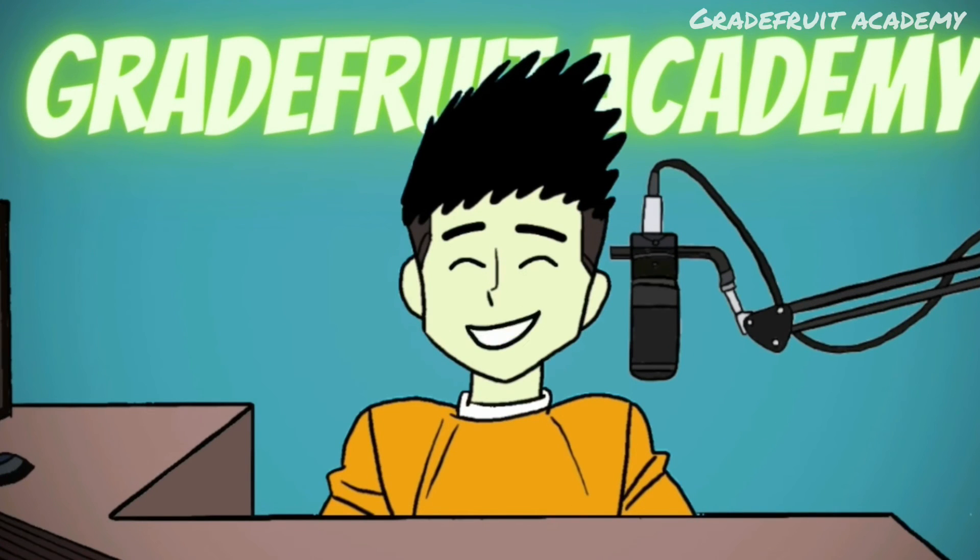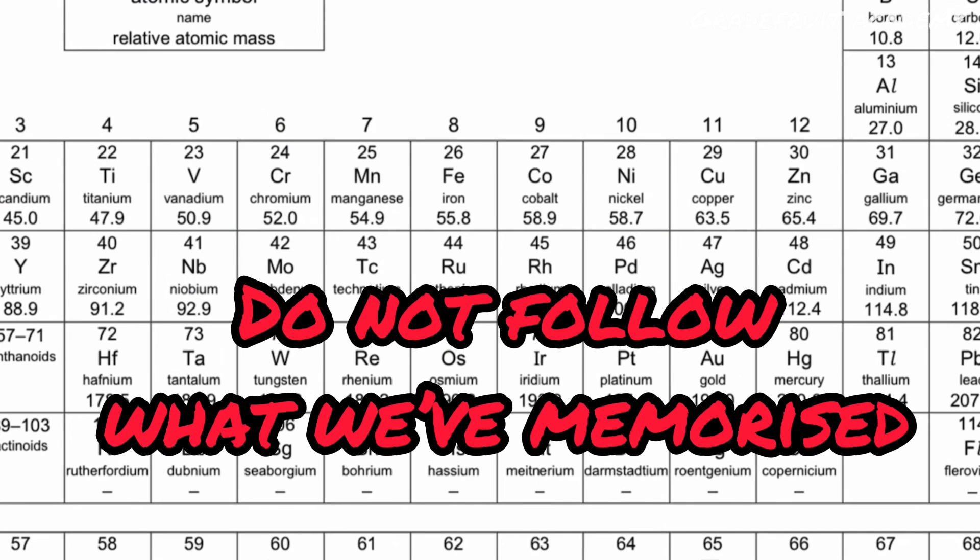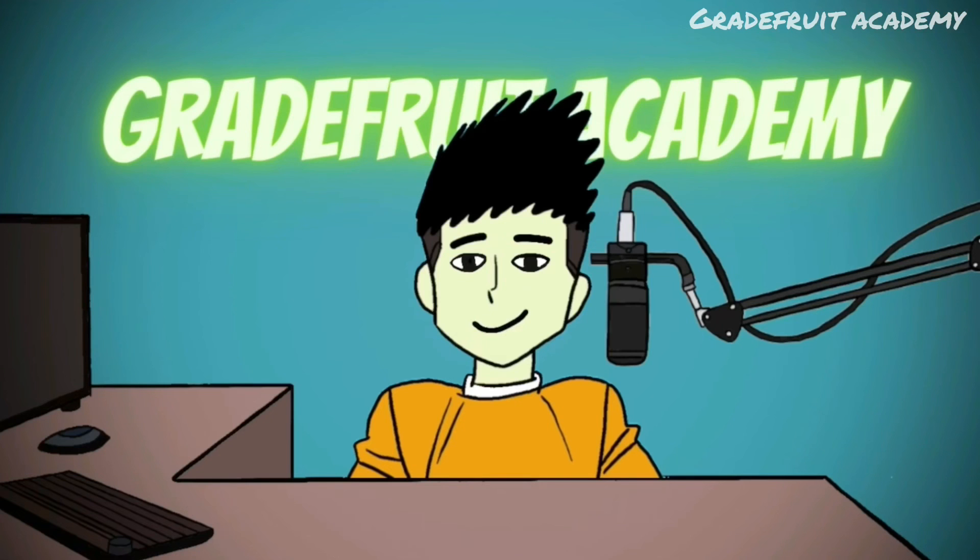Now go try it out on your own. But before that, remember I said that copper and chromium do not follow what we've memorized? Copper's electronic configuration fills up the 3d orbital first followed by the 4s orbital, while the electrons are spread across the 3d and 4s orbitals for chromium. Not sure why? This video is gonna make sure you will be good to go.